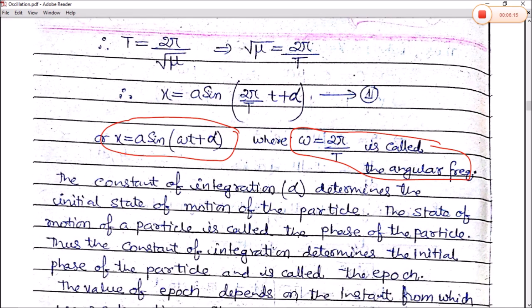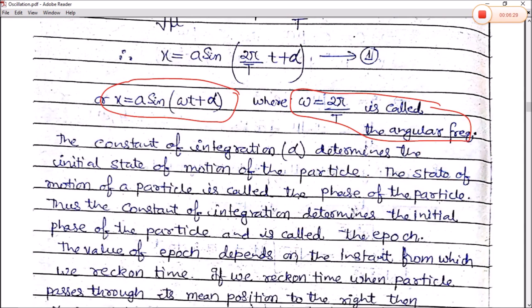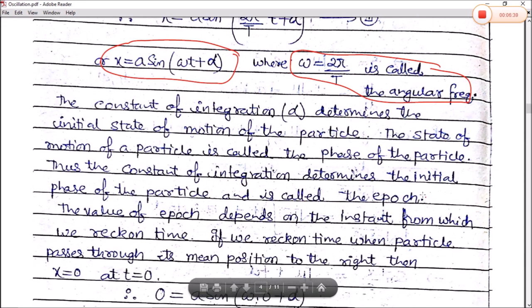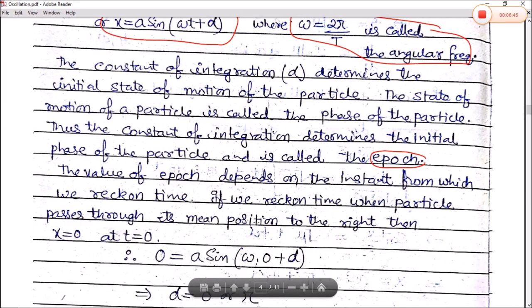The constant of integration α determines the initial state of the motion of the particle. We can express the state of motion of the particle — this is called the phase of the particle. The constant of integration α determines the initial phase of the particle. It is called the epoch.